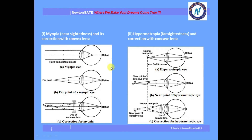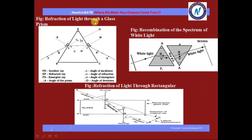Next come the diagrams of lenses — concave lens and convex lens — both diagrams you have to practice well. Then come diagrams of refraction through a prism, refraction through a glass slab, and recombination of spectrum of white light. These types of diagrams are frequently asked in the examination, so you have to practice them.